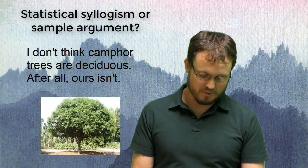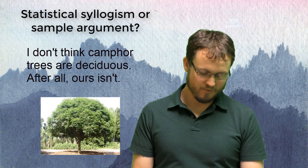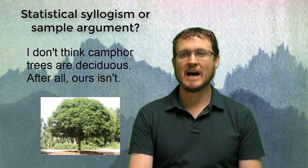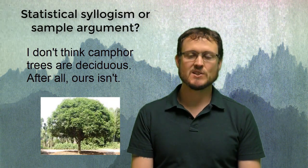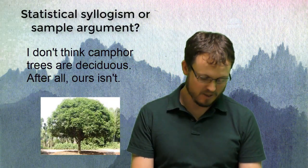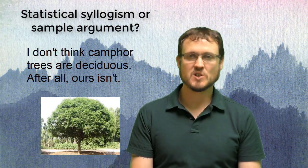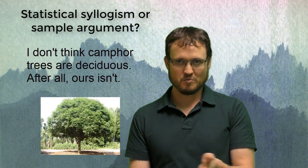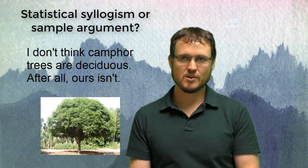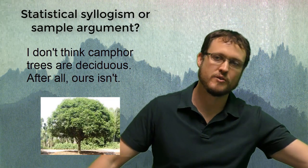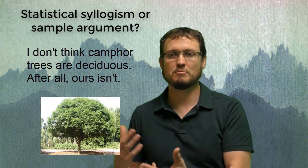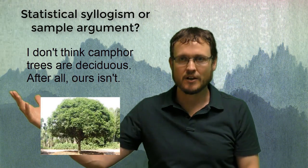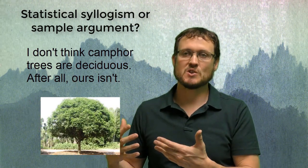Consider this argument: 'I don't think camphor trees are deciduous. After all, ours isn't.' Is that a sample argument or a statistical syllogism? First, remember from chapter 1 how to recognize a premise and a conclusion. If I can tell the direction of the logic, I can tell whether it's a sample or a syllogism. A statistical syllogism goes to a specific conclusion about a thing; a sample argument goes to a general conclusion about a population.